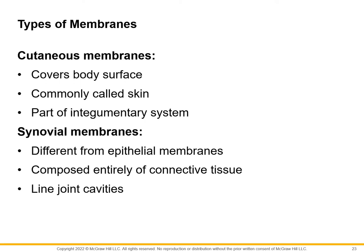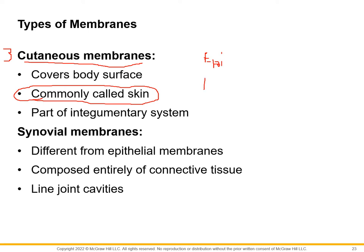Number three is called the cutaneous membrane. The cutaneous membrane is what we can scientifically call the skin. It is the dermis and the epidermis — those together make up the cutaneous membrane. That's why the bottommost layer can either be called the hypodermis or the subcutaneous layer. When you get into the nervous system, you're going to talk about cutaneous sensations, which simply mean senses coming from the skin.